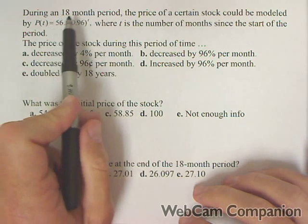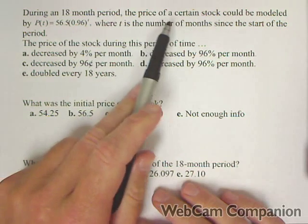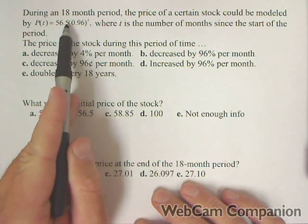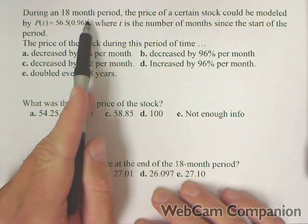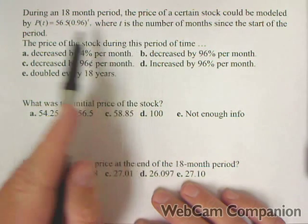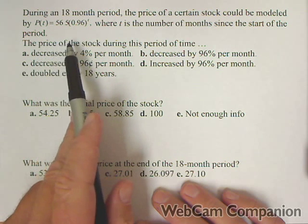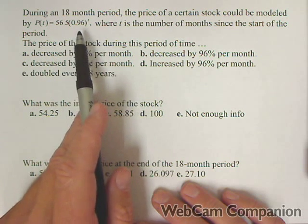Now we have an 18-month period. The price of a certain stock could be modeled by the following exponential function: 56.5 times 0.96 to the t, where t is the number of months since the start of the period. What can we say about this stock price during this period of time?